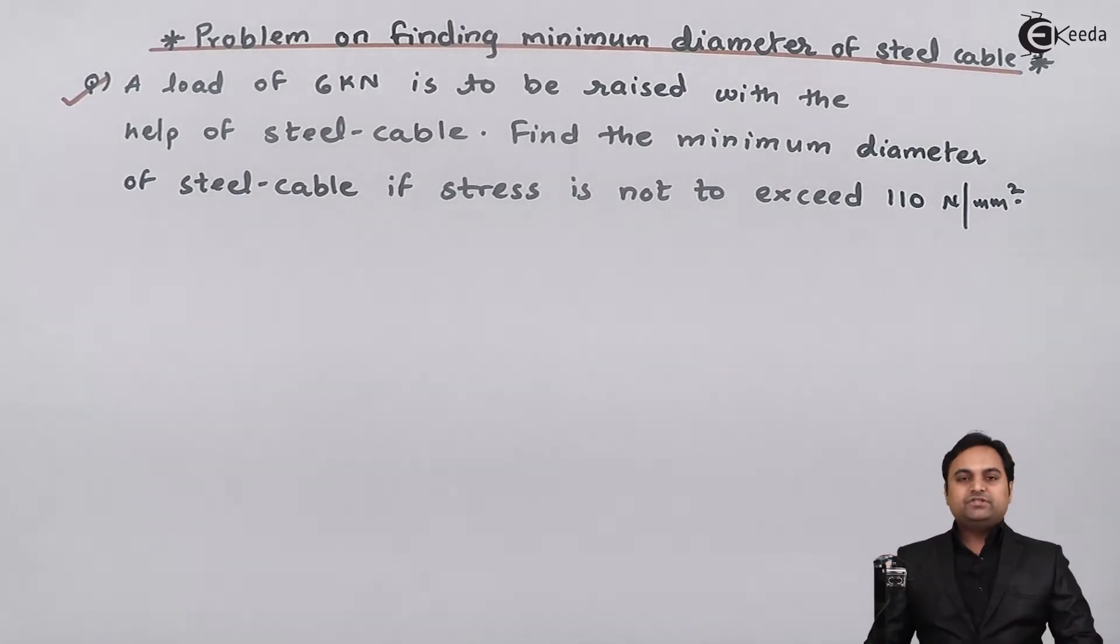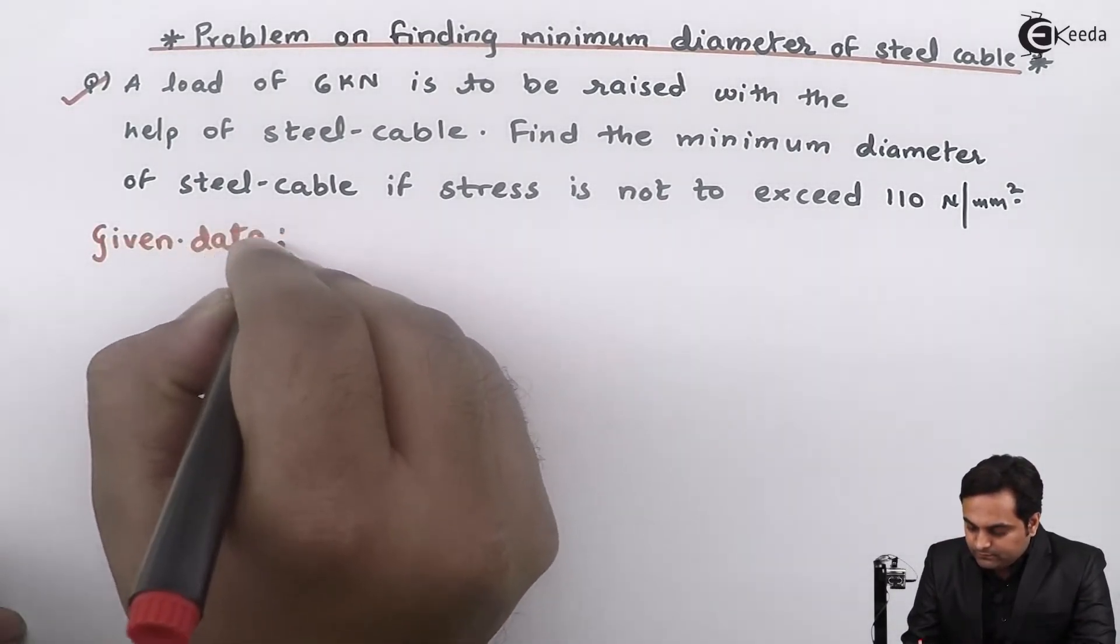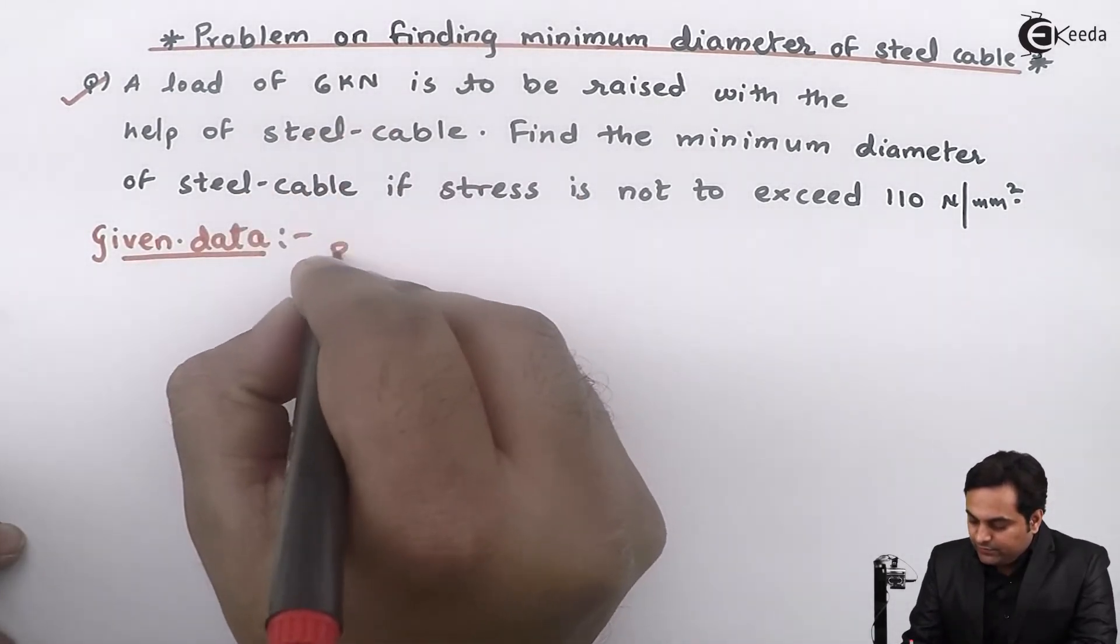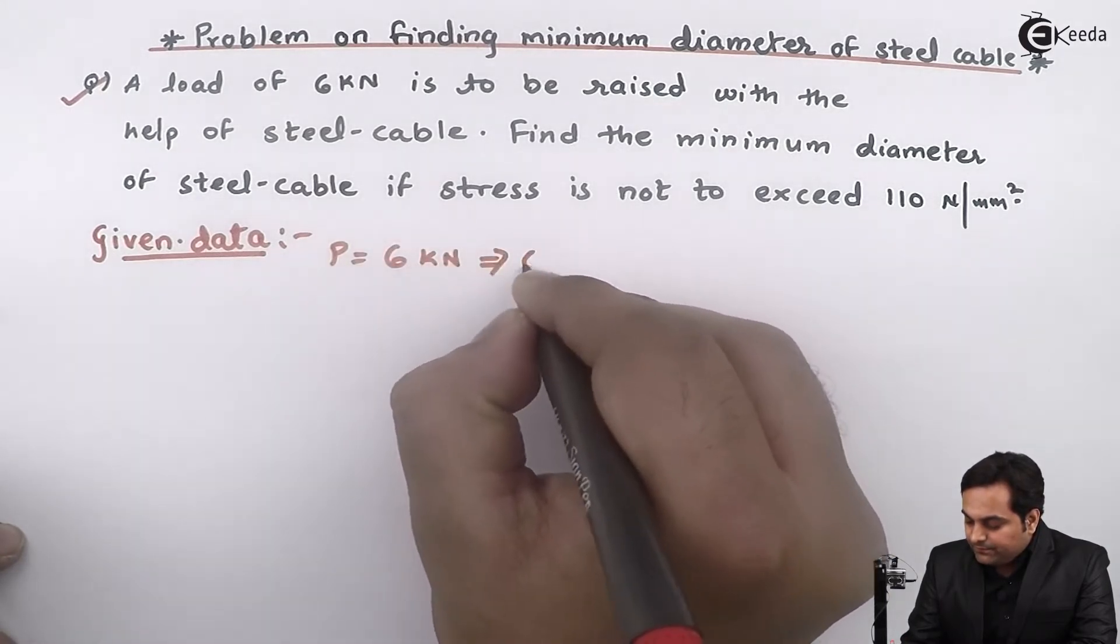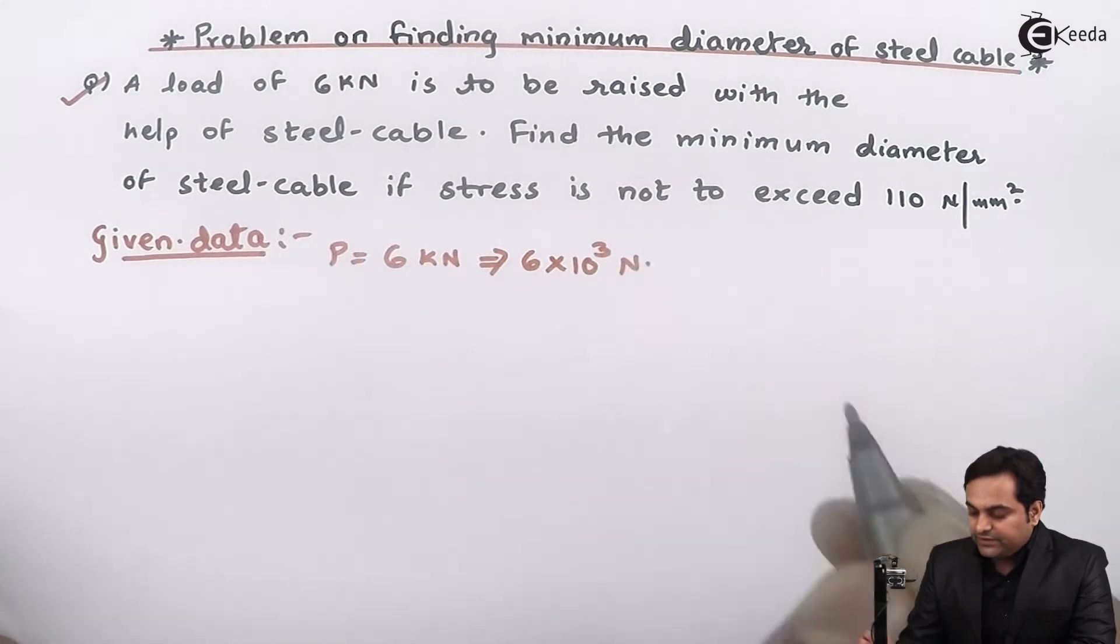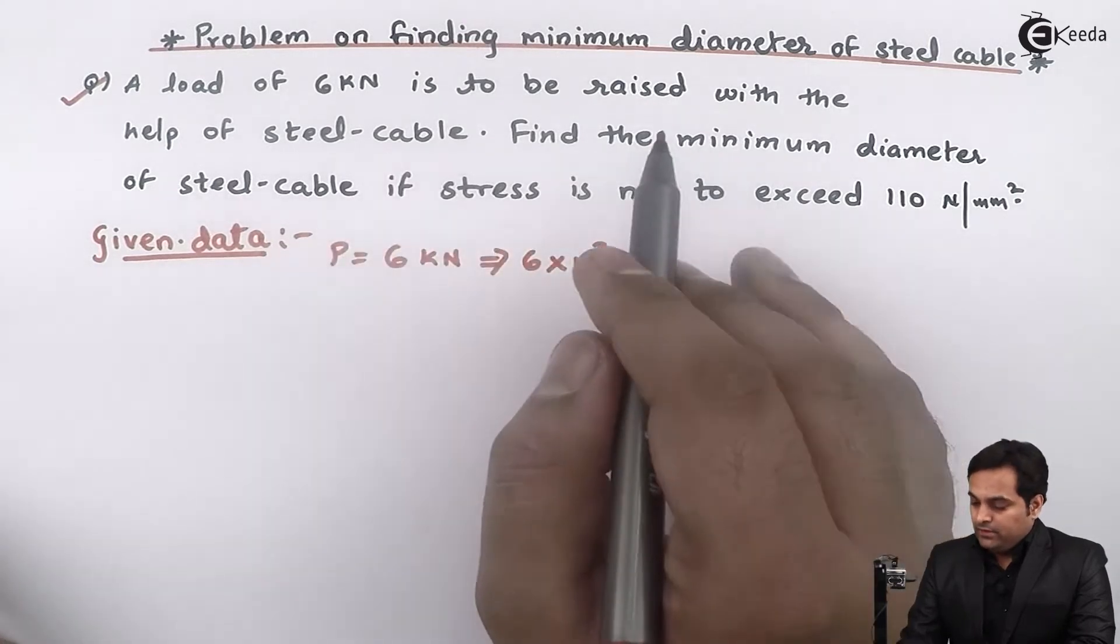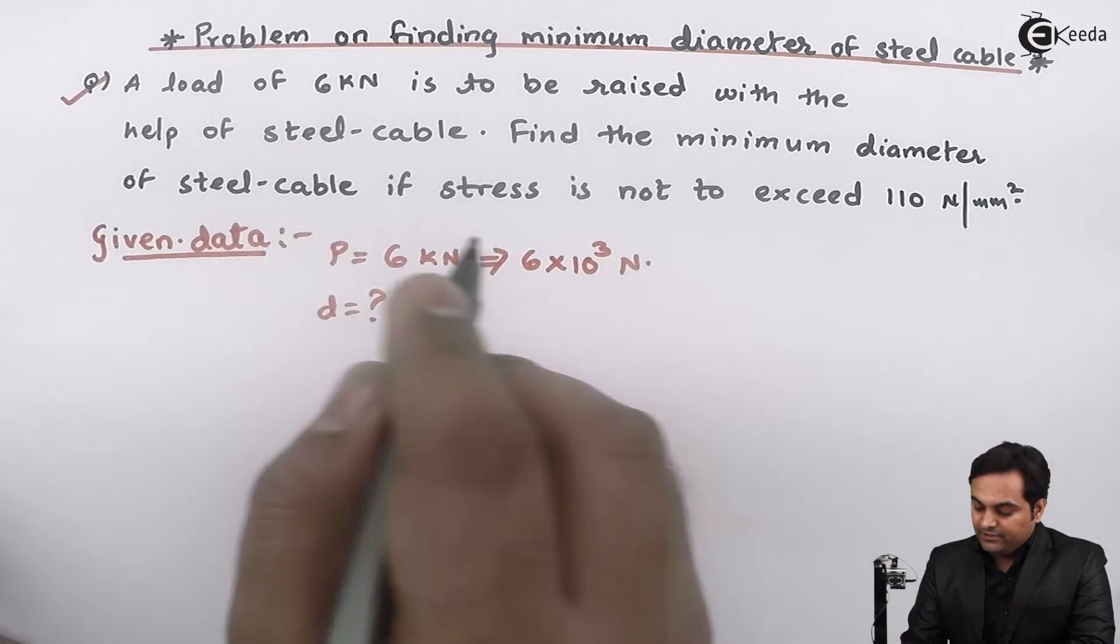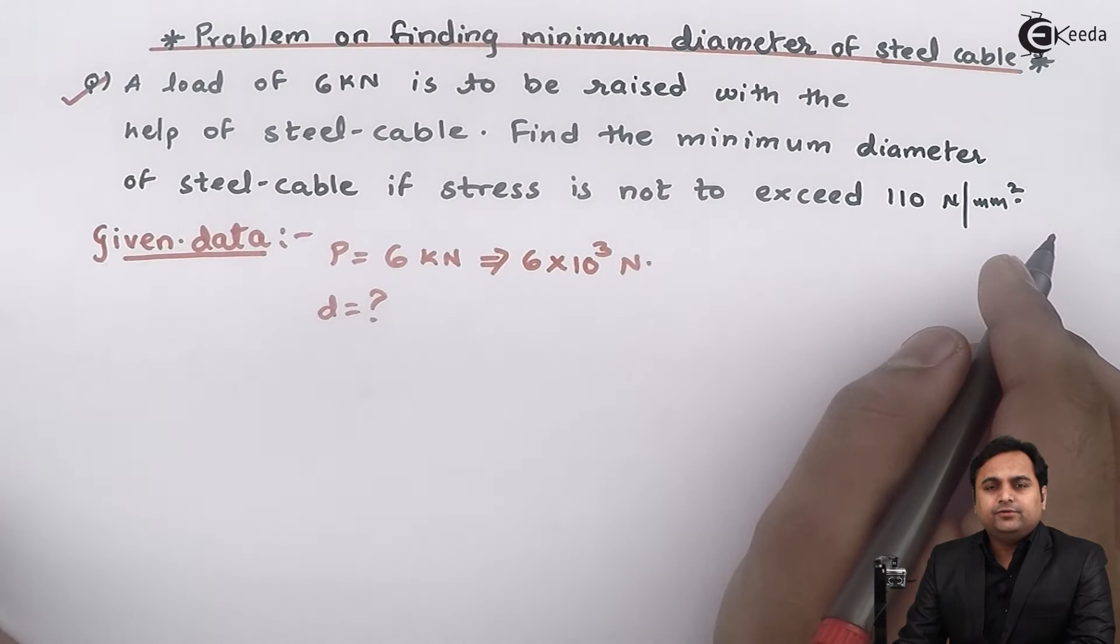Now this is the question. Whatever is given here, I'll write in the form of data. It is given that a load of 6 kilonewtons, so P is 6 kilonewtons, which equals 6 times 10 to the power 3 Newtons, is to be raised with the help of steel cable. We need to find the minimum diameter of steel cable if stress is not to exceed 110 Newtons per millimeter square. Sigma is given.